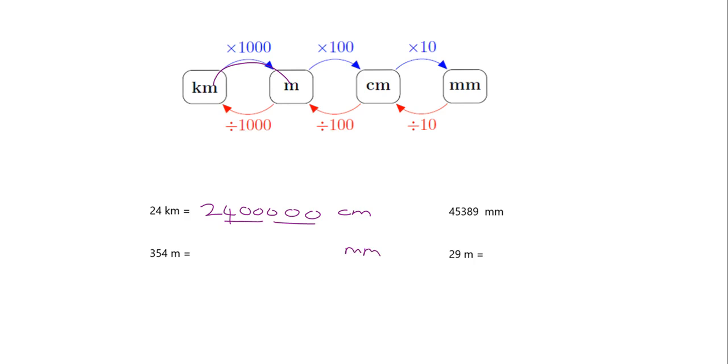All right, I want you to try one now. Take 354 meters and turn it to a length in millimeters. Pause the video and do it in your homework book. Okay, so you did this 354 times by 100 to get to centimeters times by 10 to get to millimeters. So you've got 354,000 millimeters.